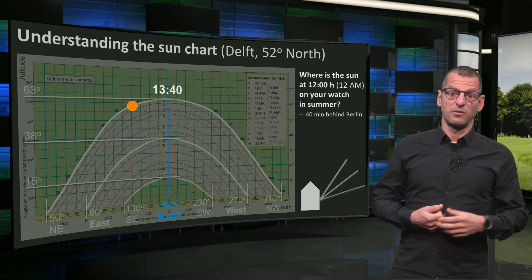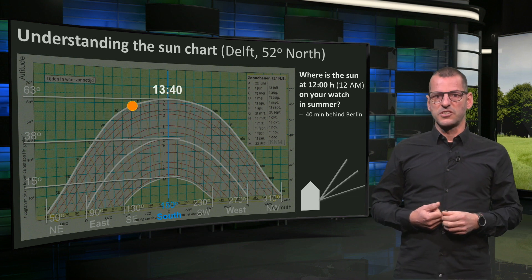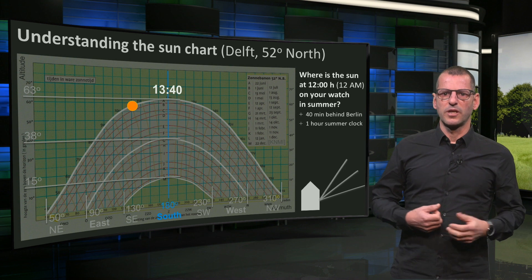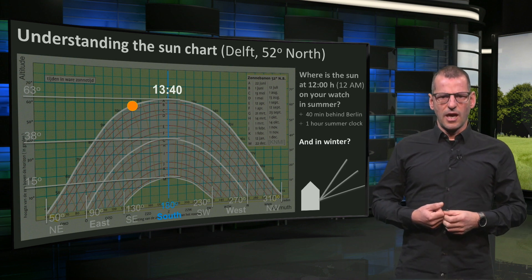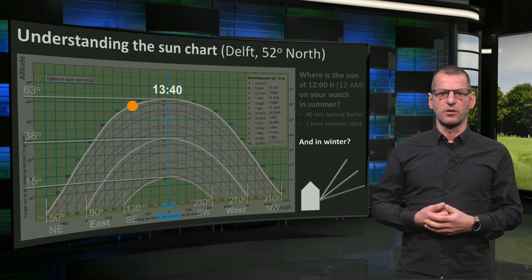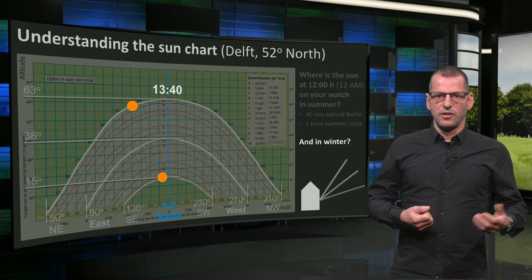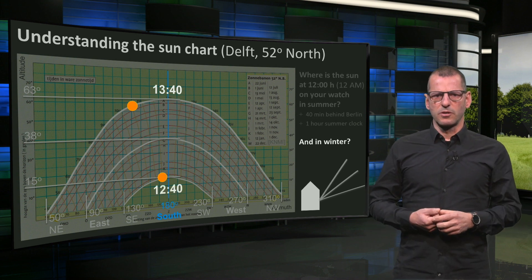First, Delft is about 40 minutes behind Berlin, which is the demarcation line for the central European time. And second, it's summer, so we live one hour later due to the summer clock shift. And where is the sun in winter, at 12 o'clock on your watch? That's here. It reaches pure south at 20 minutes to 1, because we don't have a summer clock anymore.